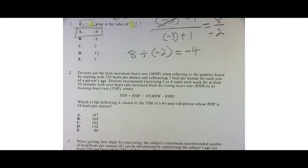It says doctors use the term maximum heart rate or MHR when referring to the quantity found by starting with 220 heartbeats per minute and subtracting one beat per minute for each year of a person's age.